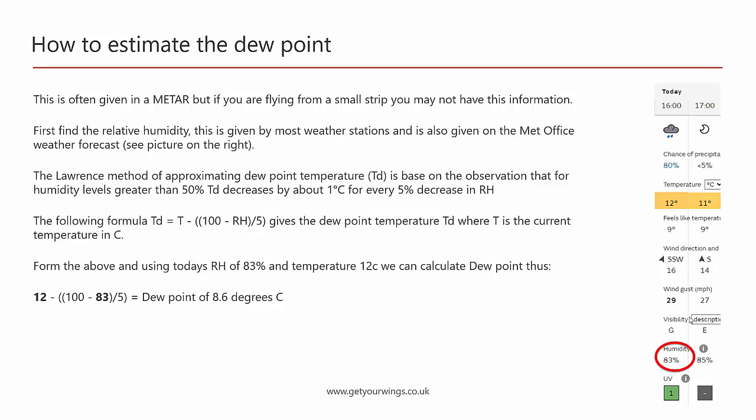The problem is that you don't always have dew point in the forecast. If you don't have the dew point for your current location, you can actually work out the dew point temperature from the relative humidity. The relative humidity is given in the general Met Office forecast — not the aviation one, just the standard forecast. We can then use the Lawrence method for approximating the dew point temperature, assuming the relative humidity is above 50%. This method is not accurate below 50%. It's based on the principle that the dew point decreases about 1 degree C for every 5% decrease in relative humidity. The formula is: T minus (100 minus relative humidity) divided by 5, which gives you the dew point temperature.